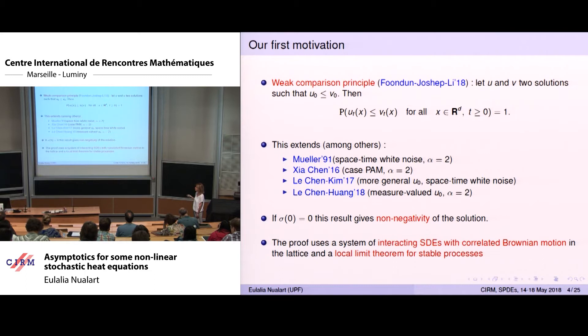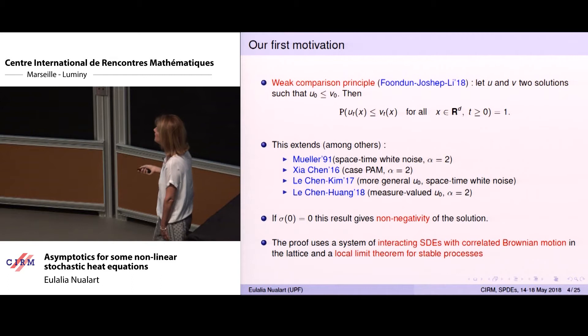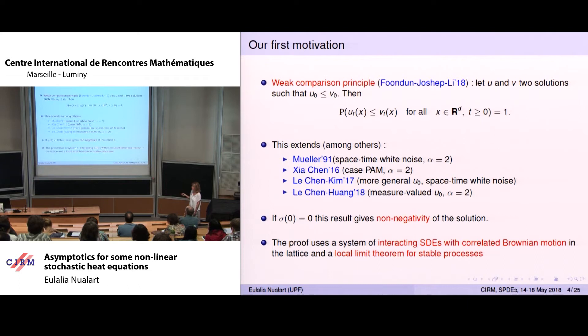Our first motivation is a recent result by Fondun, Joseph, and Lee: a weak comparison principle for this equation. If U and V are two solutions with initial conditions U0 and V0 that are comparable, then the solutions are comparable almost surely. The proof uses a system of interacting SDEs with correlated Brownian motion, and for the fractional Laplacian they needed a new local limit theorem for a stable process. This result is important because, for example, if sigma(0) is zero, it gives non-negativity of the solution — which was not known before this result.